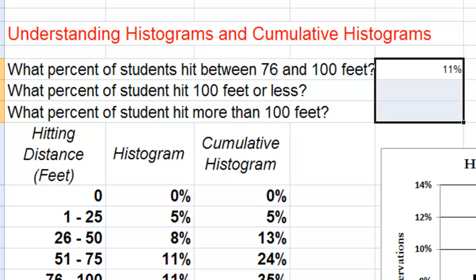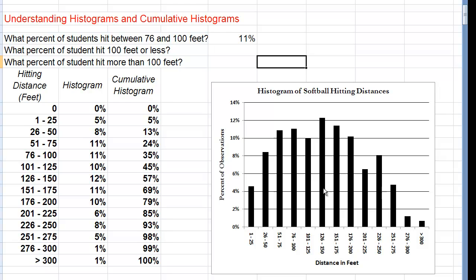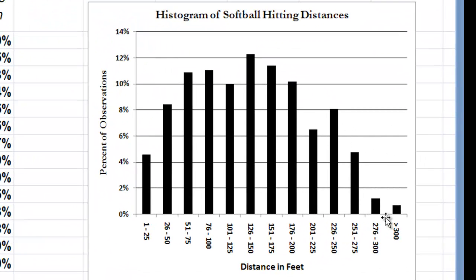So 11% of our students hit between 76 and 100 feet. As you can tell from this histogram, very few people hit more than 250 feet. Only 4% can hit between 251 and 275 feet, and only about 0.5% can hit more than that, whereas most people can hit somewhere between 20 and 200 feet.